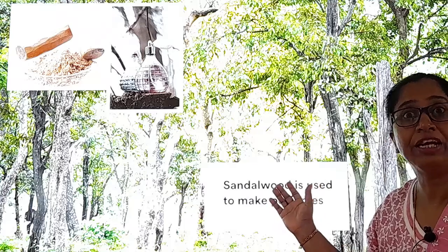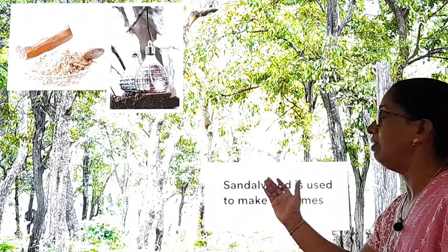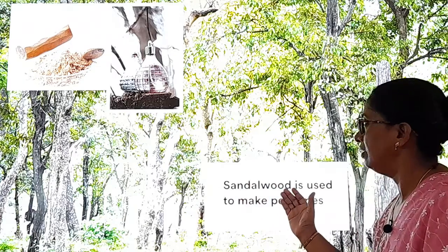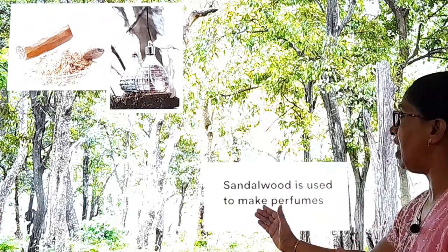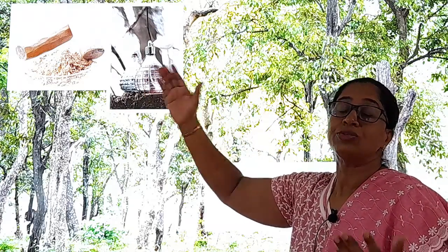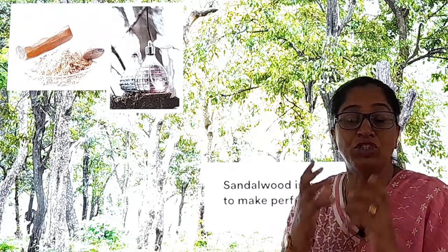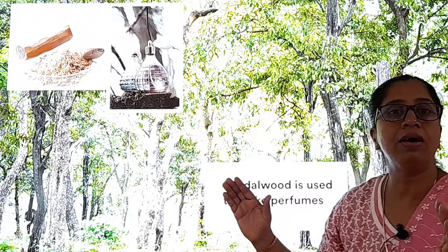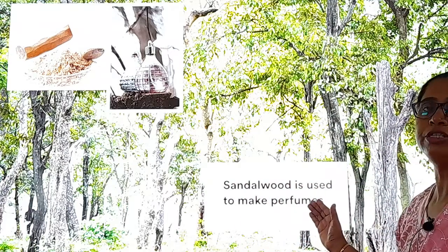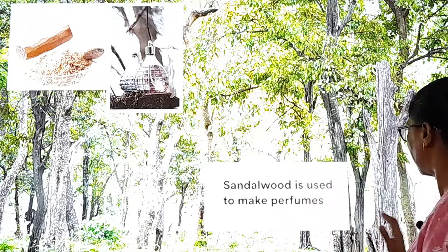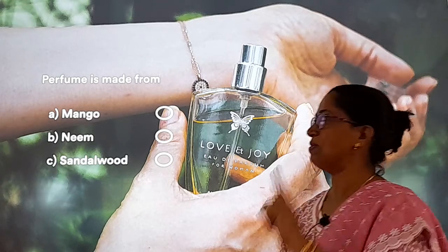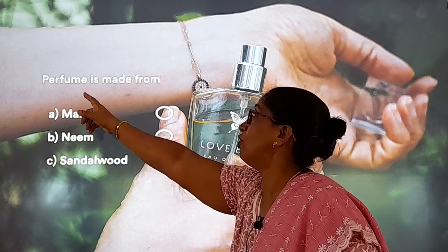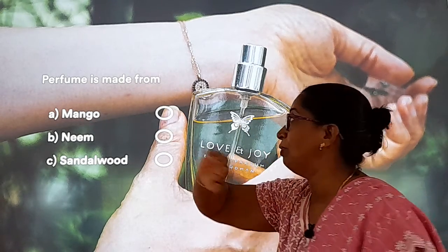Which tree is this? Yeh tree ka naam kya hai? Sandalwood. Repeat with me — sandalwood. And what is the use of sandalwood? Sandalwood is used to make perfume — perfume yaane sugandh, jo scent mummy lagati hain, kapdon mein achhi khushbu aati hai. That is called perfume. Repeat — sandalwood is used to make perfume. Sandalwood is a very nice tree because it helps us make perfume.